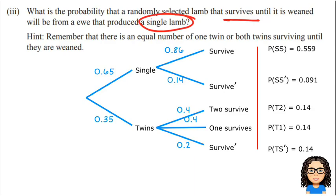Okay, so the first thing I need to think about is we're just talking about the lambs that survive. Now in this tree diagram, not all of the lambs survive. Some of them don't. So I need to first of all work out what is the probability that a lamb will survive. That's my first step.